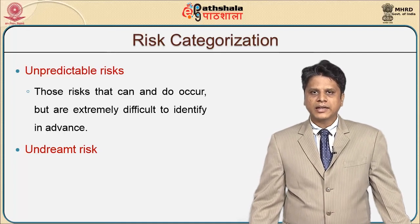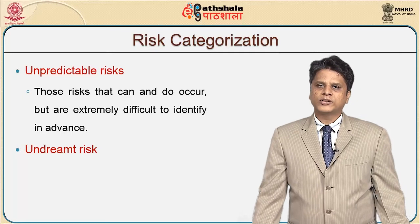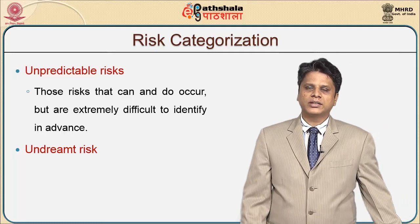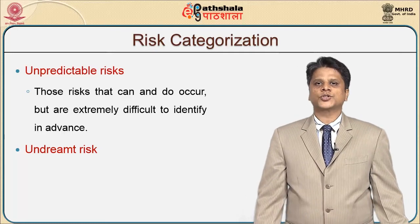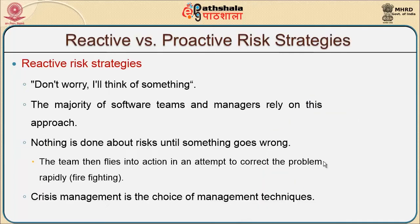There are certain risks we would never have thought could lead us to a problem — we call them undreamt risk. Between the strategies of risk, we have two different varieties: one is called reactive risk and the other will be a proactive risk.